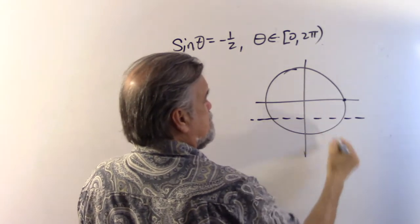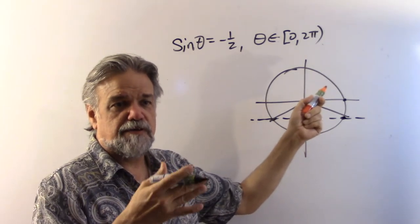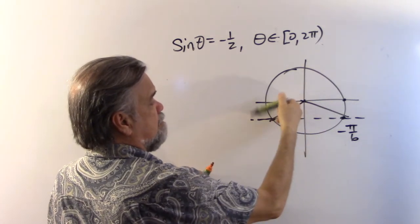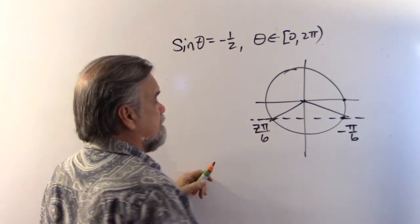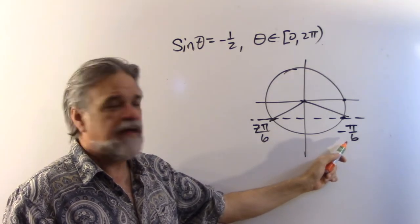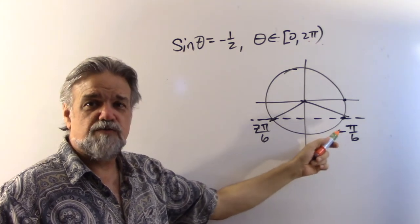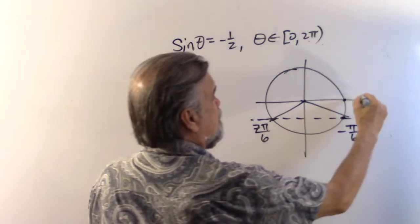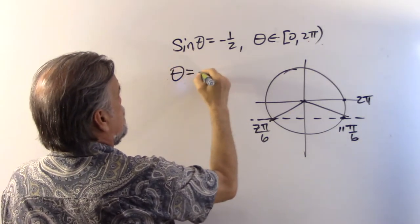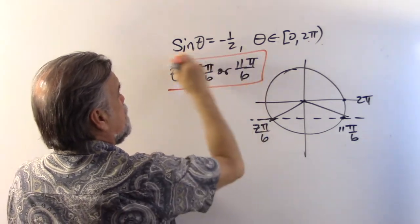Since the sine is negative, we're looking at angles with negative y-coordinates. If sine were positive one-half, the angle would be pi over six. For negative one-half, that gives negative pi over six, and on the other side, pi plus pi over six equals seven pi over six. Since negative pi over six is outside our interval, we rename it as the coterminal angle: two pi minus pi over six equals eleven pi over six. So theta equals seven pi over six or eleven pi over six.